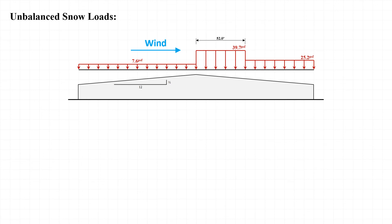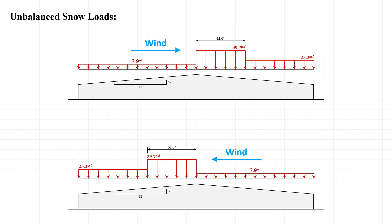Our final unbalanced snow loads look like this: with wind blowing from left to right, we have 7.6 pounds per square foot on the windward side to the left of the ridge, 39.7 pounds per square foot over the first 52 feet on the leeward side, and 25.2 pounds per square foot over the remaining portion. With wind blowing from right to left, those loads are mirrored accordingly.